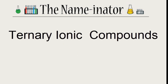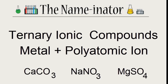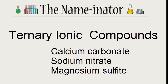Ternary ionic compounds are when we have a polyatomic ion attached to a metal. We'll end up with formulas like CaCO3, NaNO3, or MgSO4. We'll have more than two different types of elements in a ternary ionic compound, and the names will look something like calcium carbonate, sodium nitrate, or magnesium sulfite.